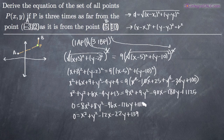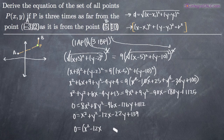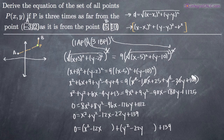Now we need to complete the square with respect to both variables, because the equation of a circle has the form x minus x-sub-one squared plus y minus y-sub-one squared. So we'll group our x terms: x squared minus twelve x, leave a blank space, then plus y squared minus twenty-two y, leave a blank space, then plus one hundred and thirty-nine. To complete the square, the coefficients on the quadratic terms must equal one — we have one x squared and one y squared, so that's already done.